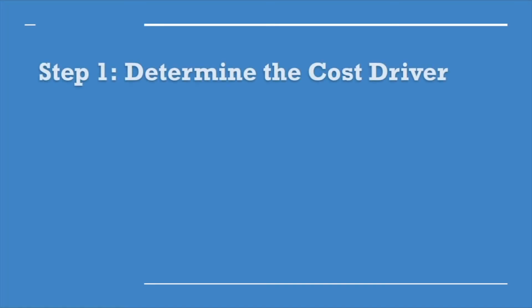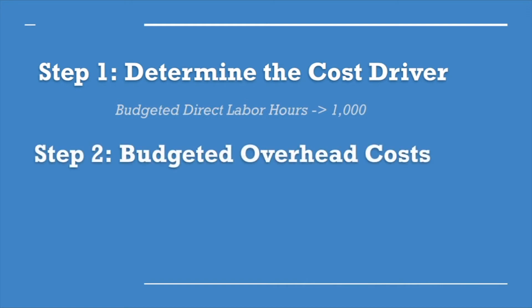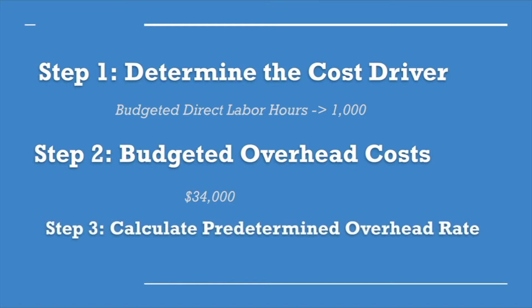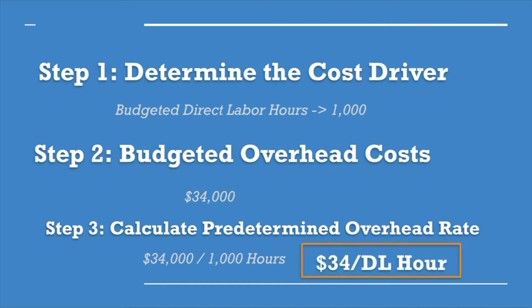Step one: determine the cost driver. In this example, our cost driver will be labor hours, so we budget 1,000 labor hours. Step two: determine our budgeted overhead costs. Based on our estimates, we estimate $34,000 will be our budget. Step three: calculate a predetermined overhead rate. To do that, we divide step two by step one — $34,000 divided by 1,000 hours — equals $34 per direct labor hour.